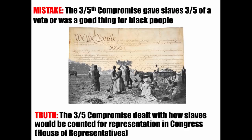The three-fifths compromise gave slaves three-fifths of a vote, or was a good thing for Black people — that's false. The three-fifths compromise dealt with how slaves would be counted for representation in Congress. Anytime you're talking about humans in terms of fractions, it's not a good thing. The South wanted their slaves to count not to extend rights, but because more people means more representatives. So at the Constitutional Convention, they compromised and counted each slave as three-fifths of a person so both North and South could accept the new Constitution.